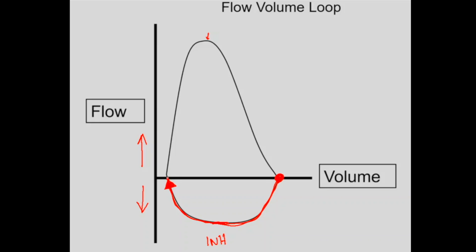Then we're asked to blow out as hard as we can. The first air that comes out is the air in our trachea — that's the larger airway. We get a large flow generated by those large airways, using our intercostal muscles. At some point, we start to decrease the flow, moving from the large airways into the smaller airways, which is the last portion. This portion is effort independent and is the rate-limiting step in getting the air out.